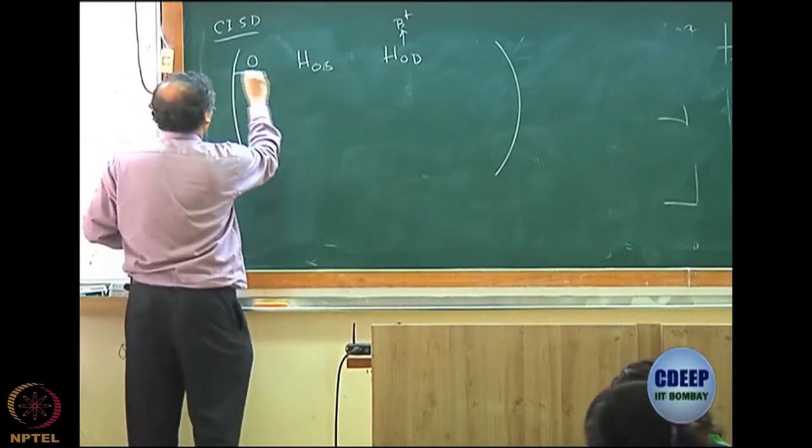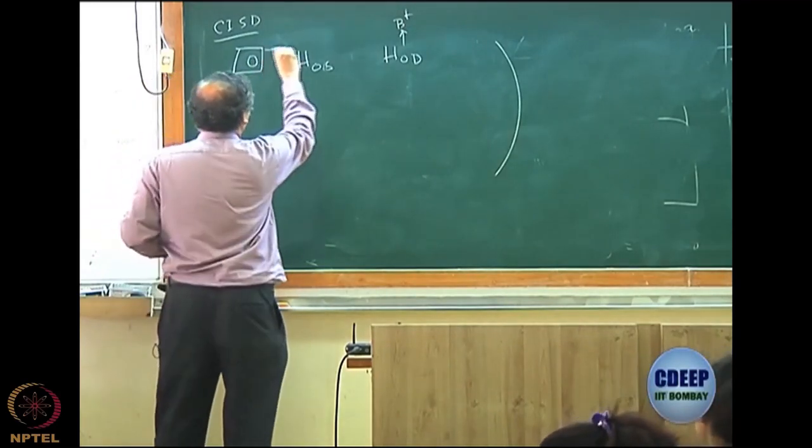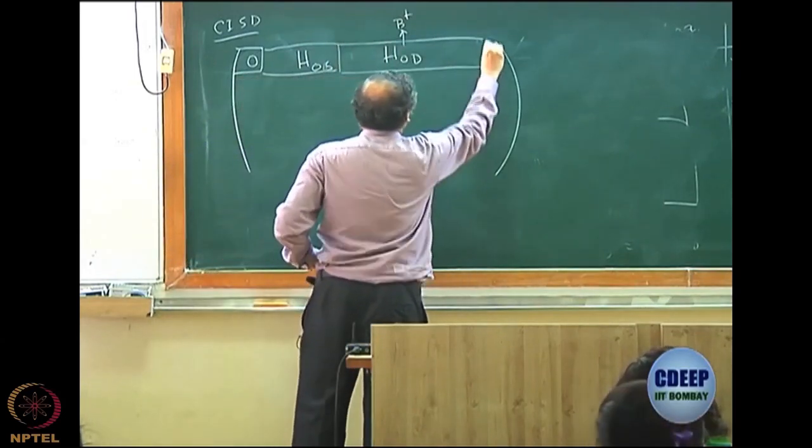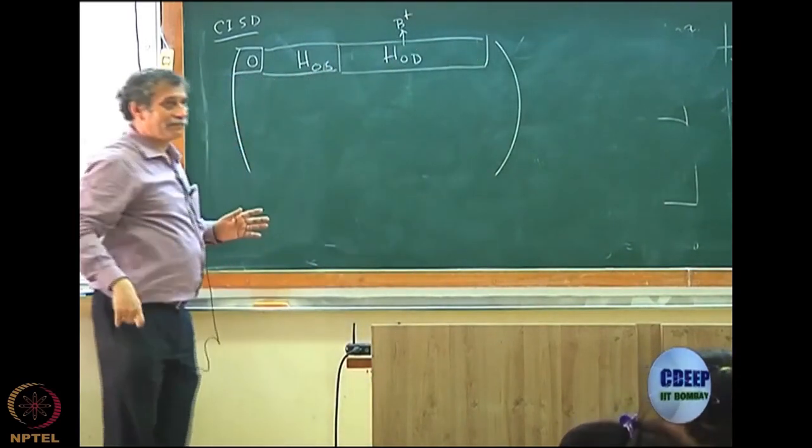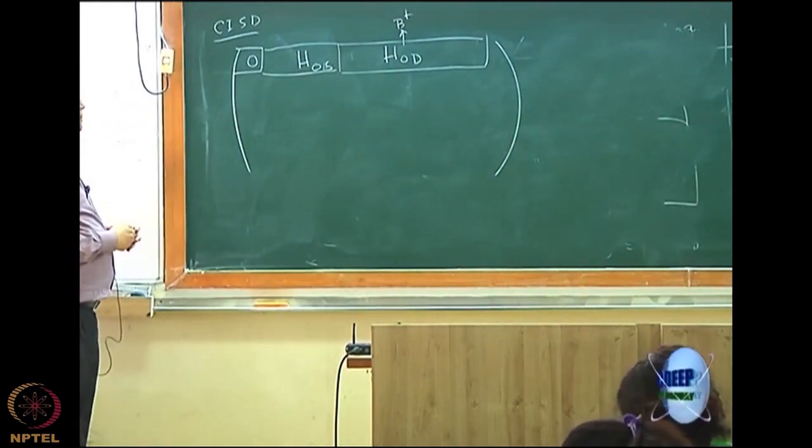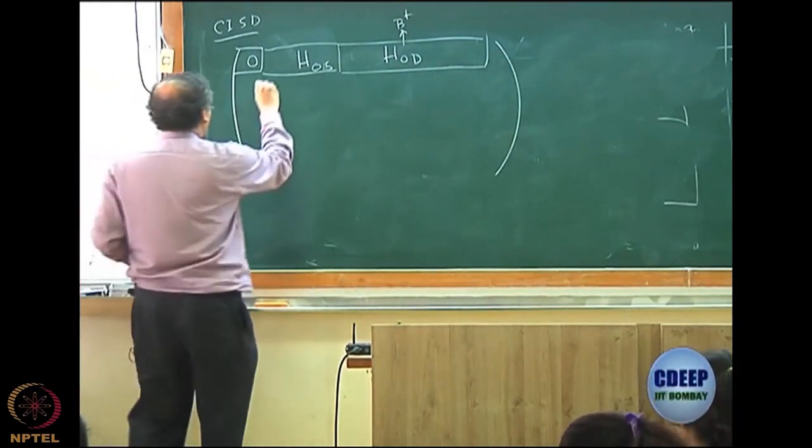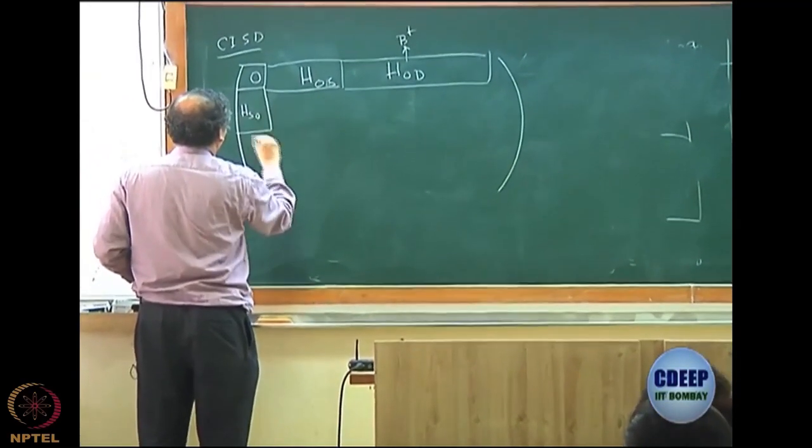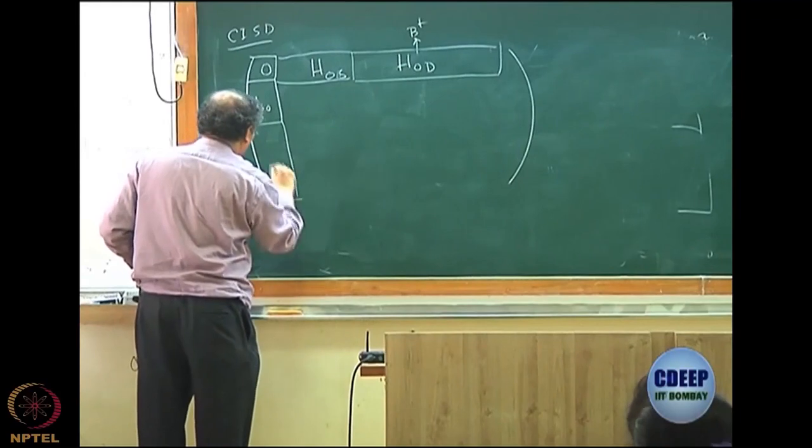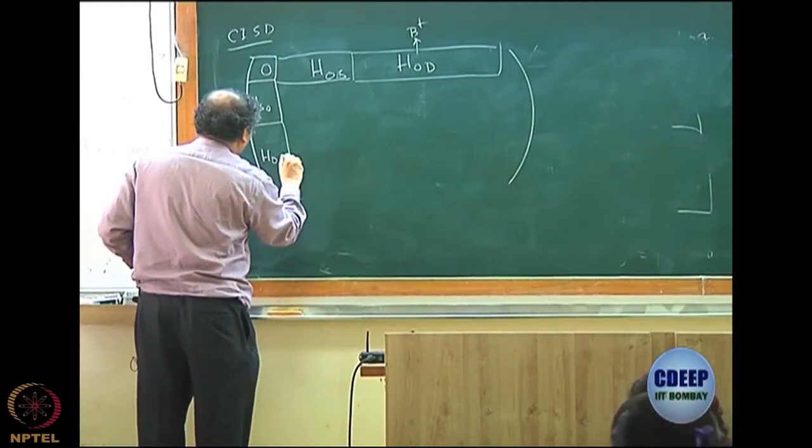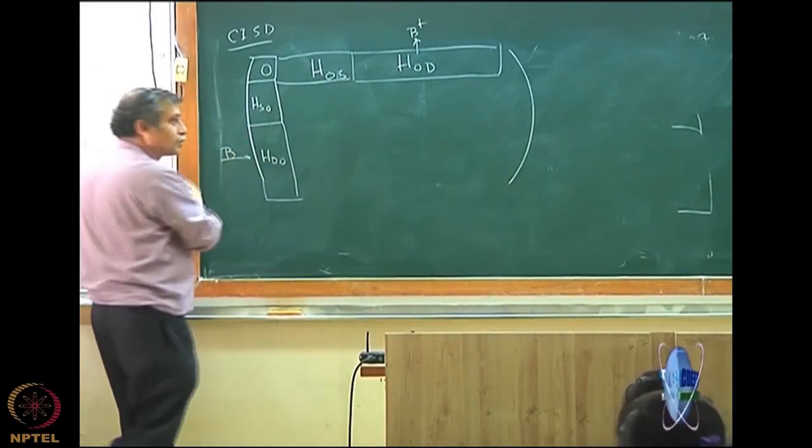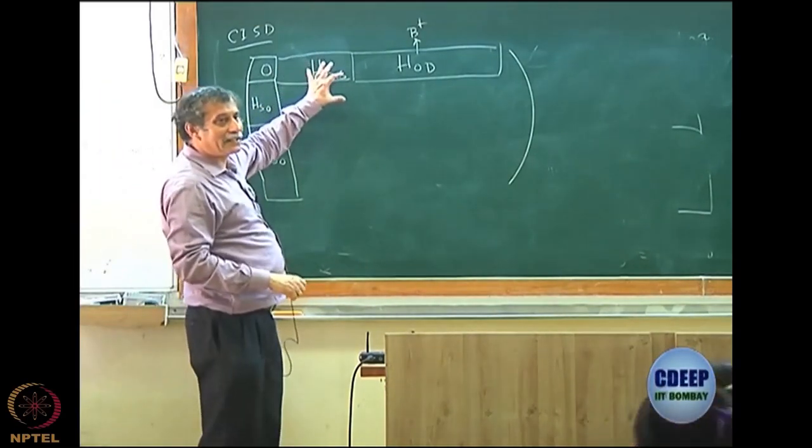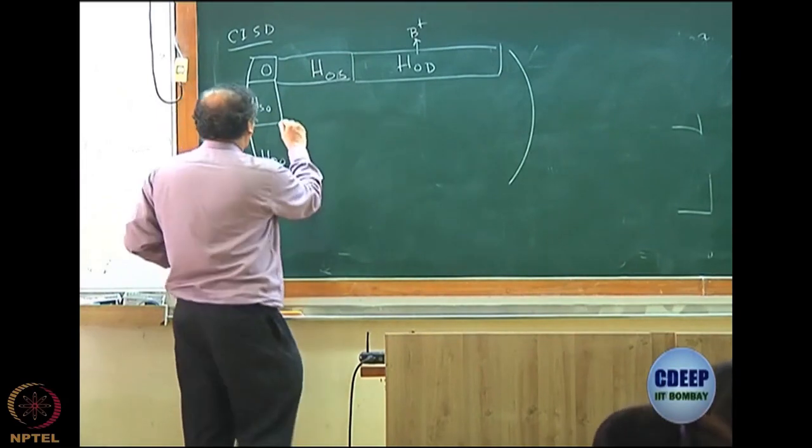CISD has three blocks. Hartree-Fock, which is only one by one block. Then you have a block of singles, Hartree-Fock, then you have a block of doubles. Of course, this should be larger than this. Quite clear, number of doubles should be larger than the number of singles. Then you have another block which is exactly opposite, HS0. Then another block, column block which will be HD0. This is what I call B.